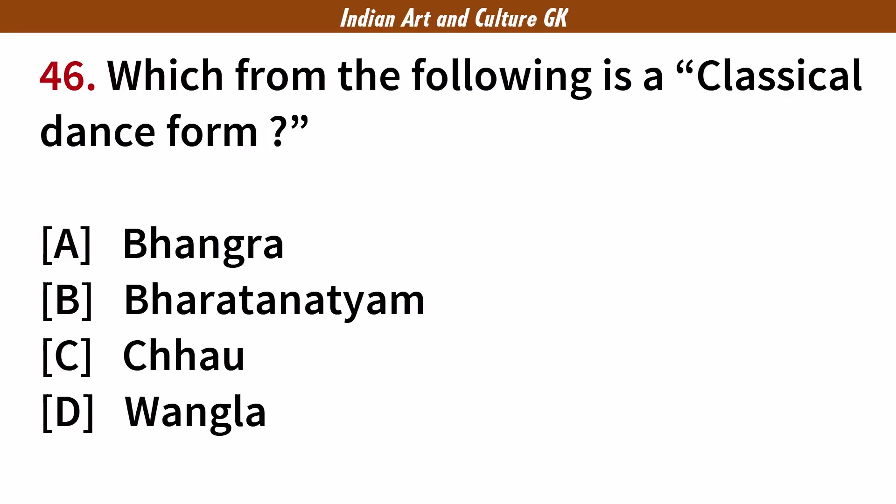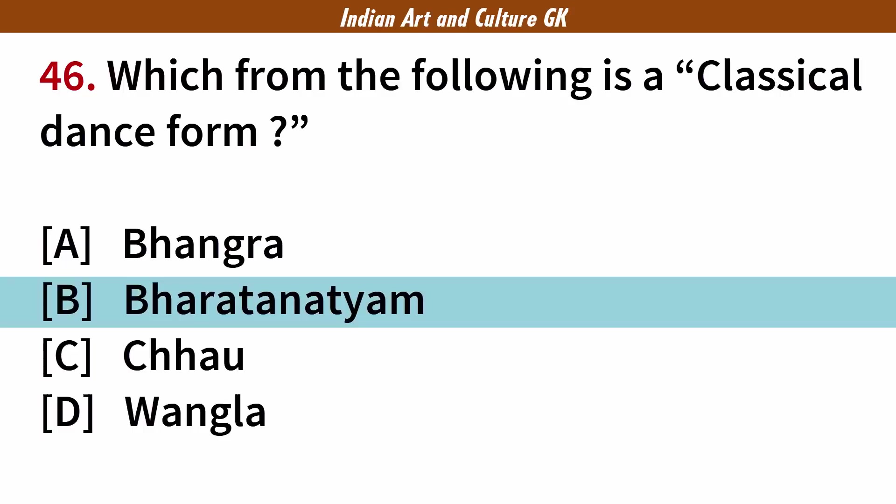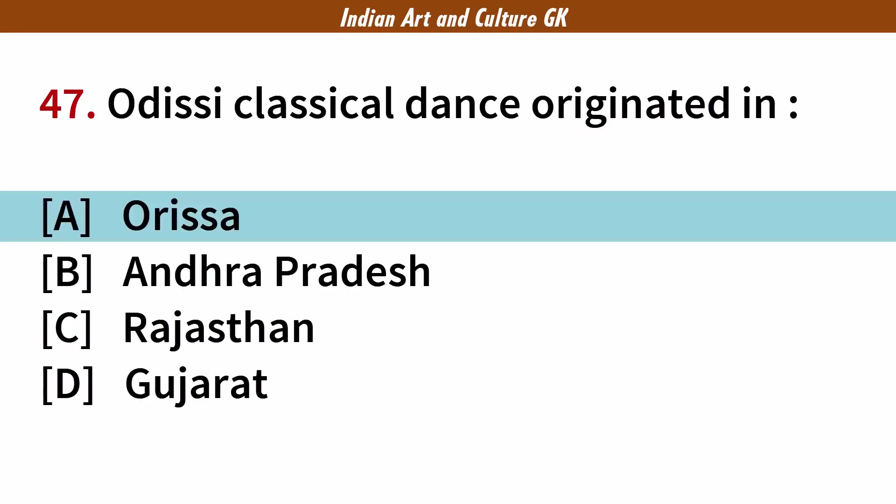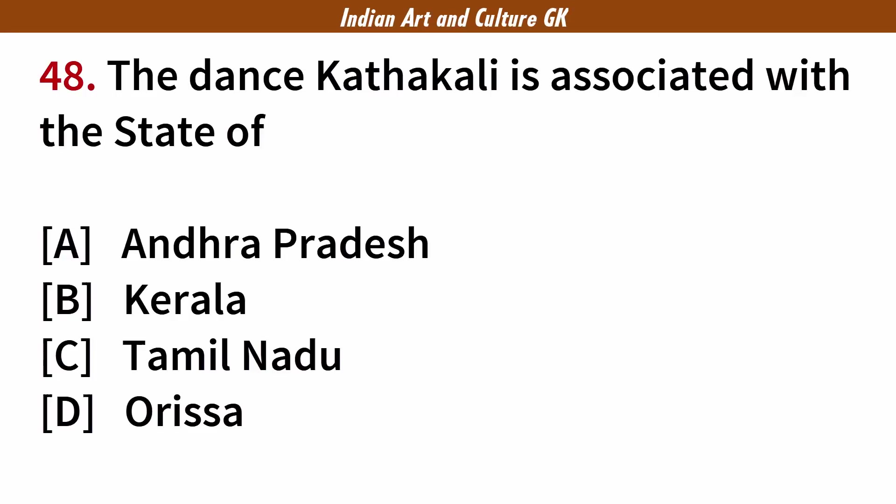Which from the following is a classical dance form? Answer: B. Bharatanatyam. Odissi classical dance originated in? Answer: A. Odisha. The dance Kathakali is associated with the state of? Answer: B. Kerala.